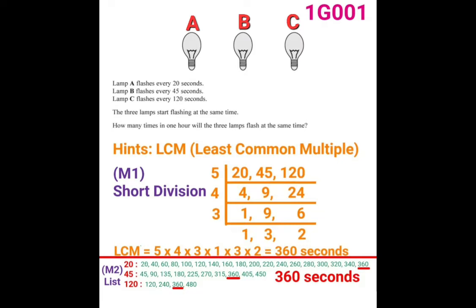The first method is short division. You can see on the screen I've already listed out the steps. First, put the three numbers of seconds — 20, 45, and 120 — on the first row. Now think about what is the common factor of the three numbers. The answer is 5, so write a 5 on the left-hand side.